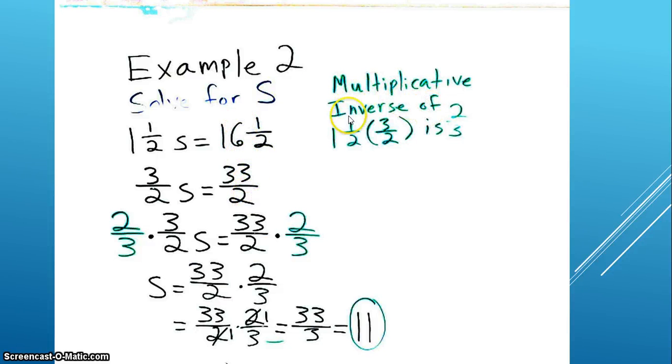The inverse of 1 and 1 half is 2 thirds. So we're going to multiply 2 thirds on both sides, and we get s equaling 33 over 2 times 2 over 3. The 2 in the numerator and the 2 in the denominator cancel each other out, so we're left with 33 over 3, which equals 11.